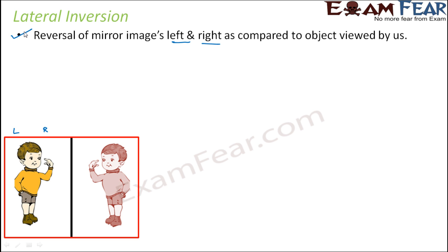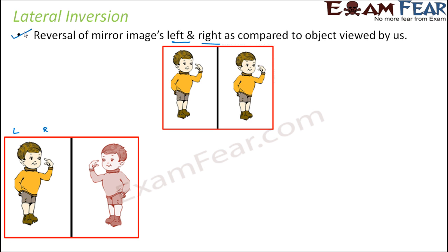Lateral inversion happens for all image formation in plain mirrors — it always happens. Now the question is: why does that happen? For a while, let us assume there is no lateral inversion. In that case, the image should look like this if we assume lateral inversion should not happen.